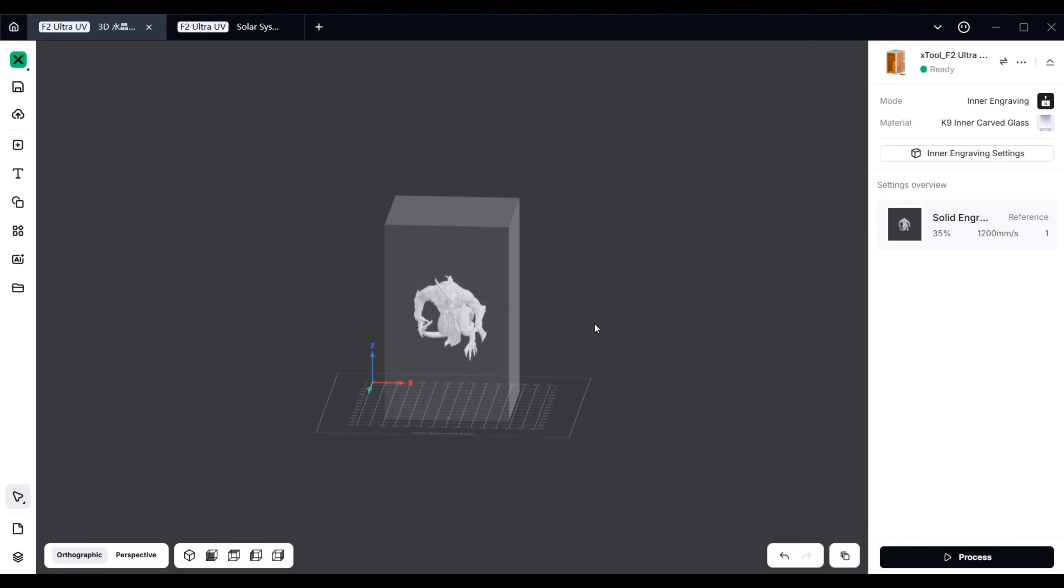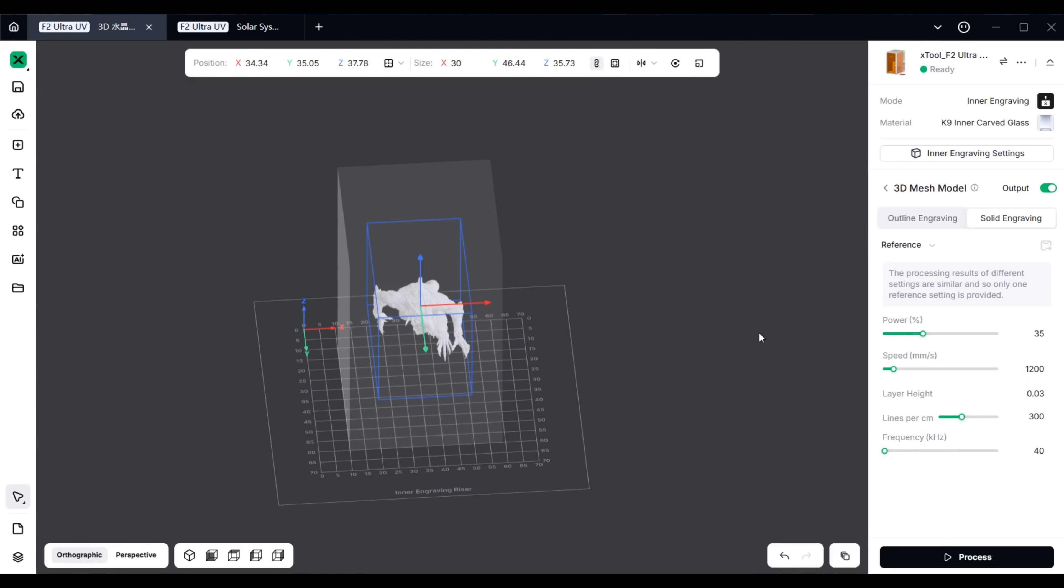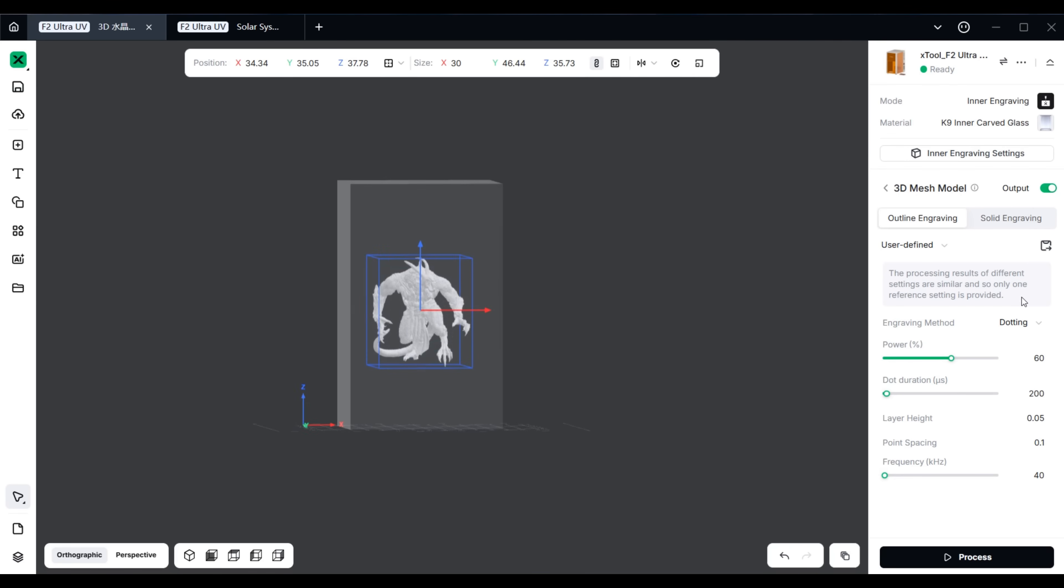3D engraving requires files in 3D model format such as STL, OBJ, AMF, 3MF, GLB, or PLY. If you are a 3D printer user, you should be familiar with these 3D model files. Just import your 3D model file into X2 Studio for 3D crystal engraving. If you don't have a suitable 3D model file, you can even use the AI-made feature within X2 Studio to generate one.